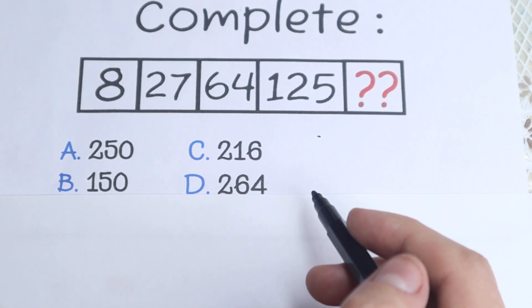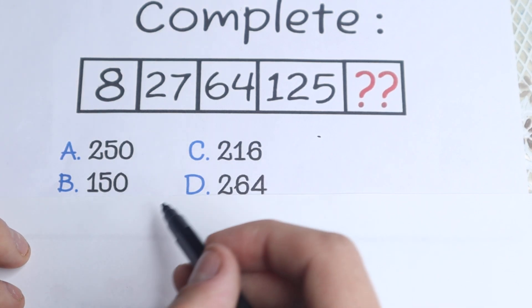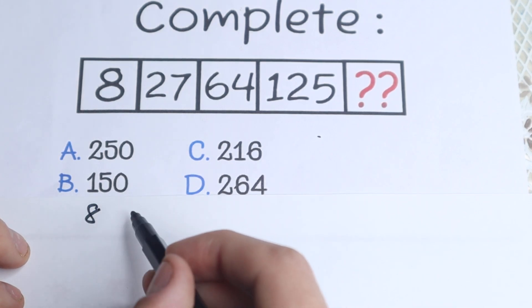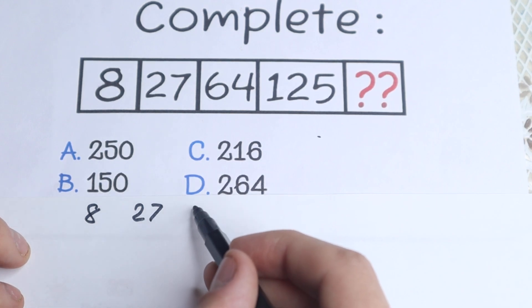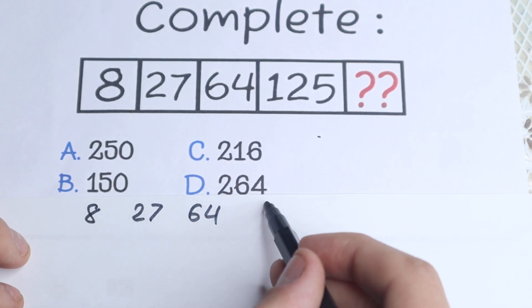So we have this question: 8, 27, 64, 125. Let me read these numbers right here real quick: 8, 27, 64 and 125.